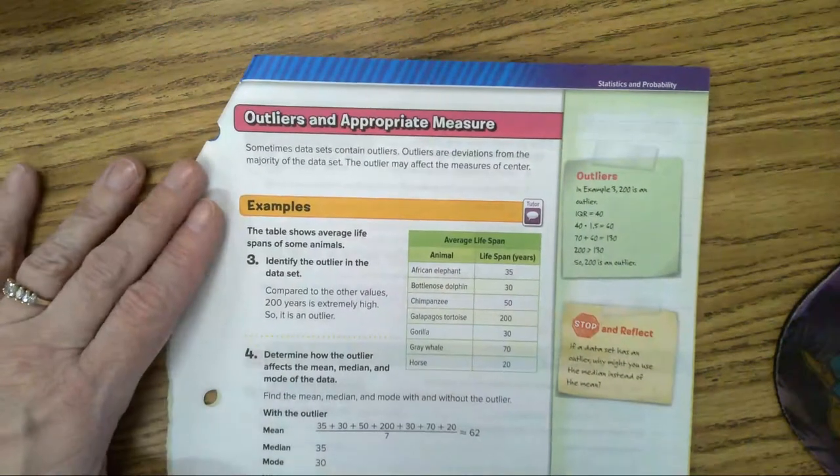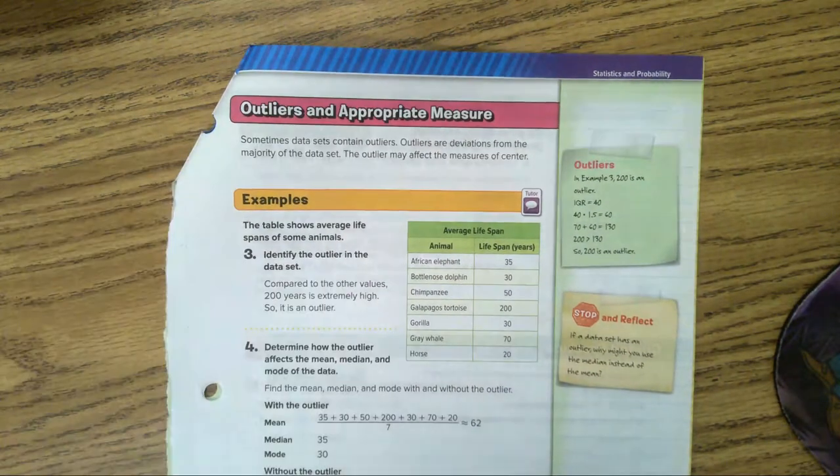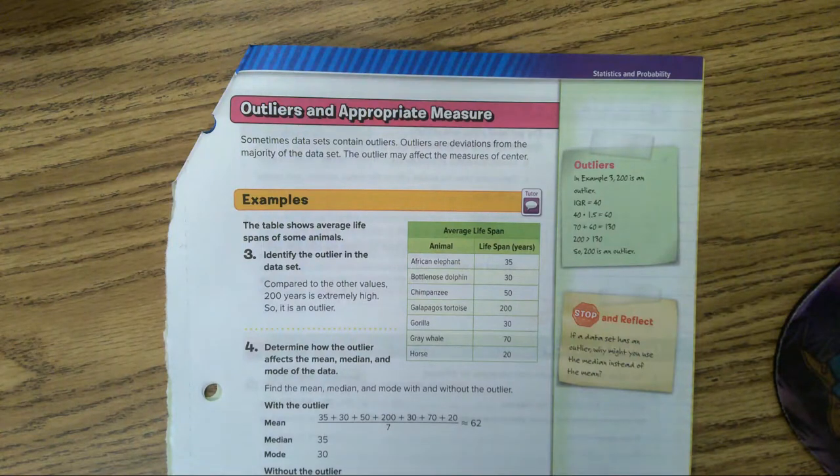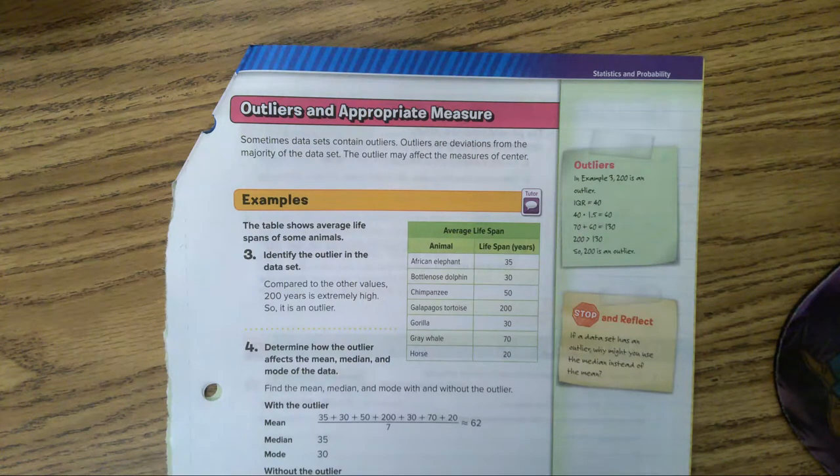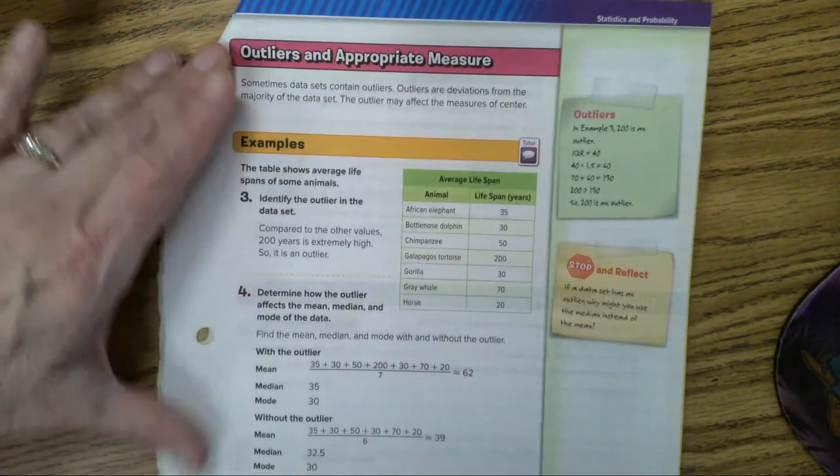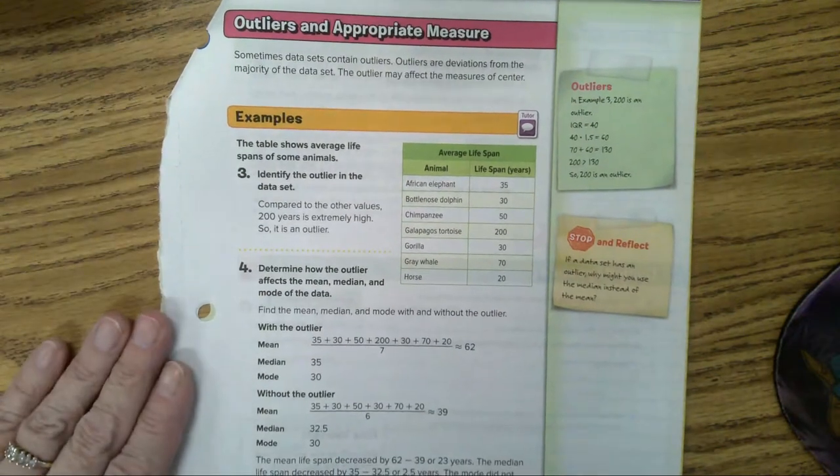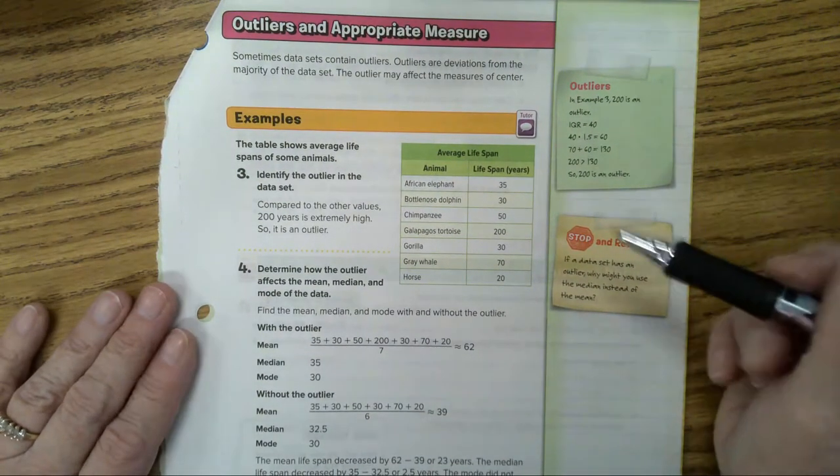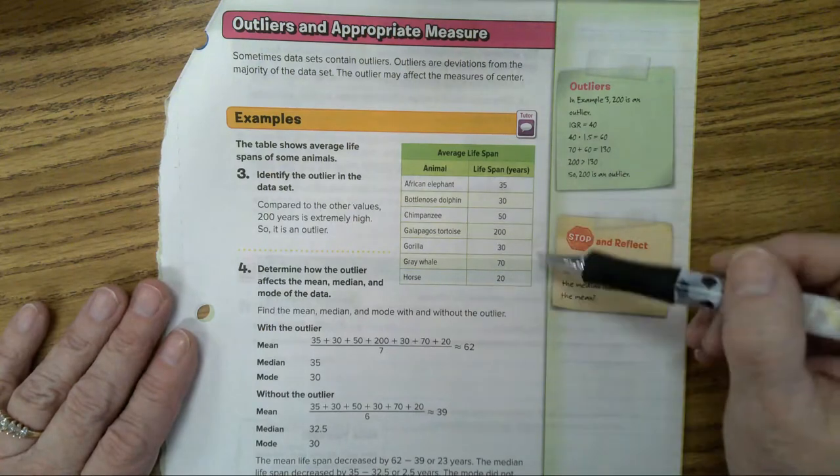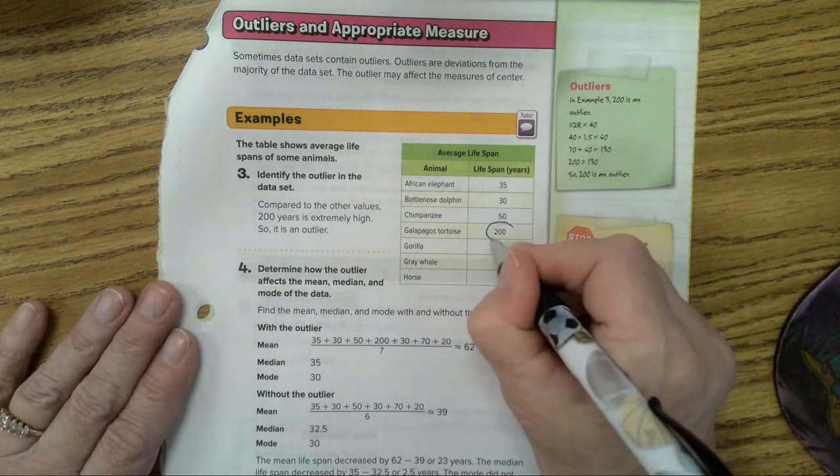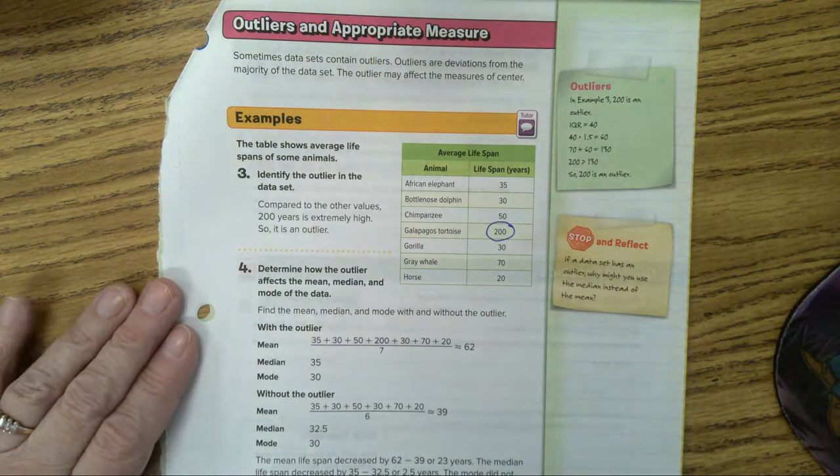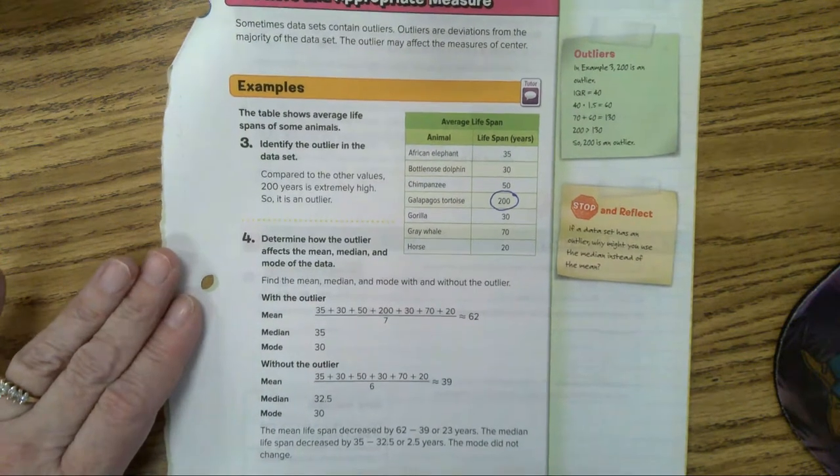Outliers and appropriate measures. Sometimes data sets contain outliers. Outliers are deviations. That means they're changed from the majority of the data set. They stick out. The outliers may affect the measure of center. We're going to see what that does. Let's look at number three. Identify the outlier in the data set. Well, it's really easy to see on this one. Which one is the outlier? 200. It's much larger, isn't it? Any questions on how to find an outlier? It can be extremely high or extremely low.